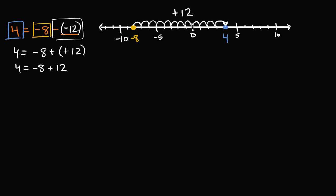Which we know is true. Negative eight plus eight is zero, and then you add another four, you get to positive four. So that one was pretty interesting. Let's do another one — we can't get enough practice. All right, so let's say we had blank minus negative two is equal to negative seven.